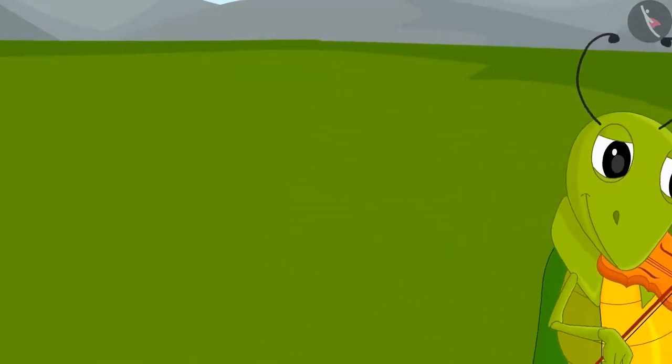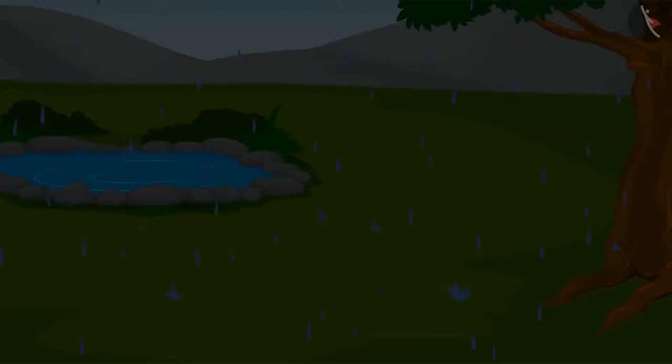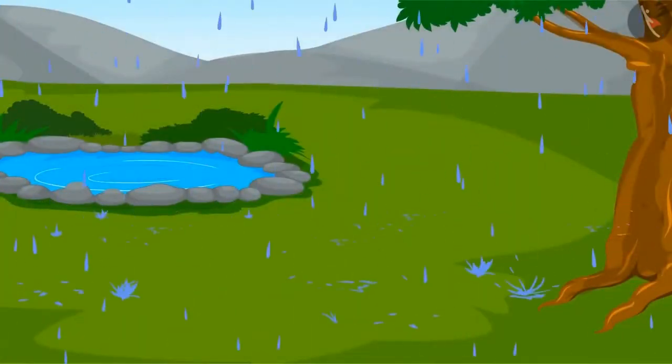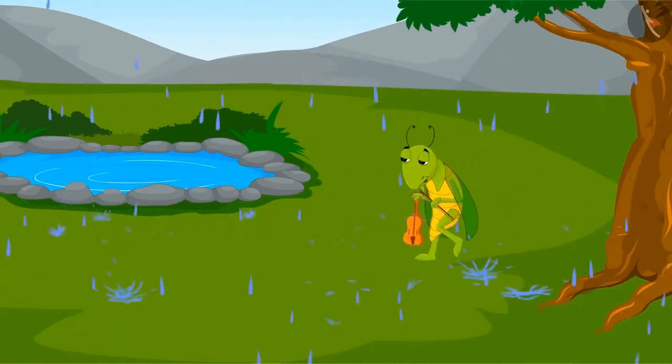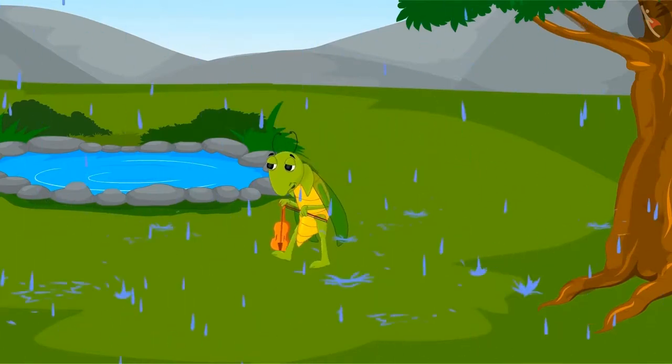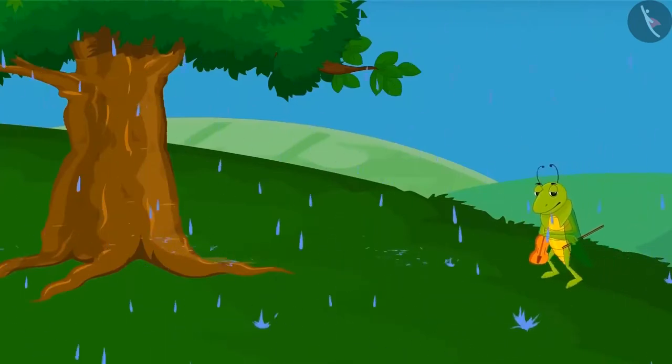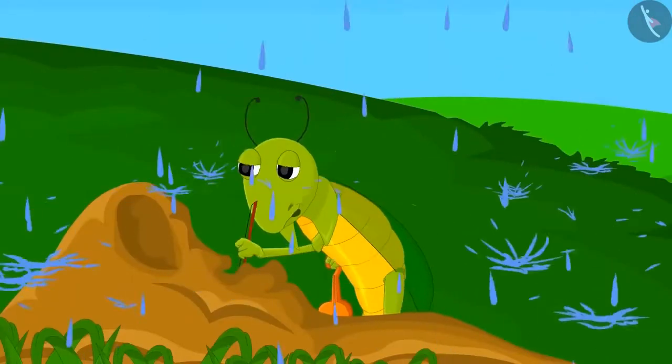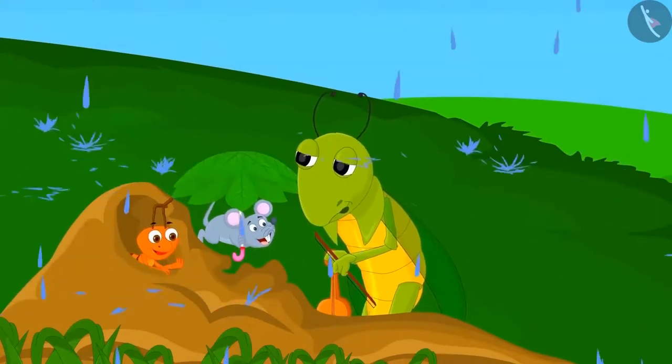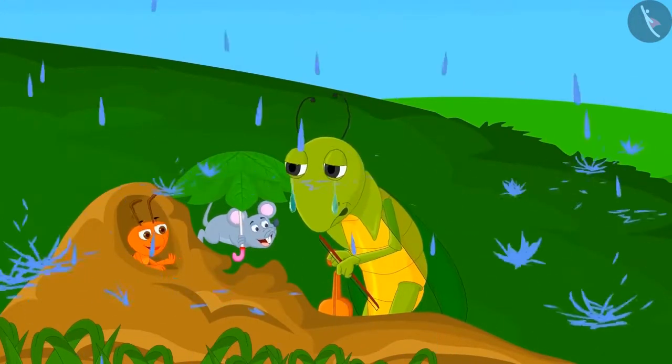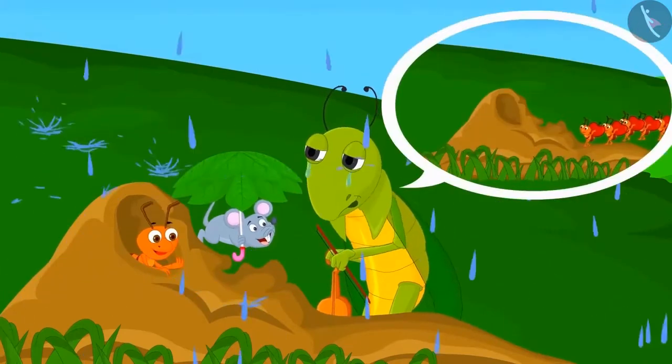The next morning it started raining heavily. Tinku was very hungry and started wandering around in search of food. He then reached the house of the ants and mice. He apologized to the rat that he had learned the lesson of his carelessness.